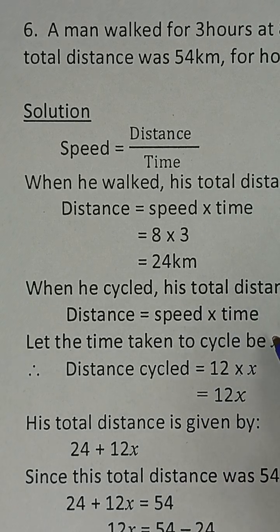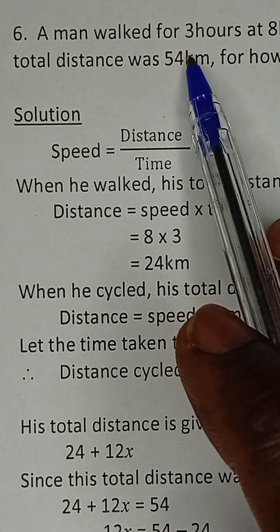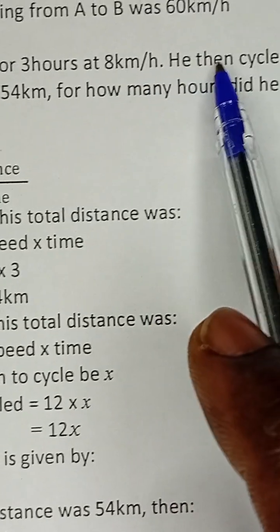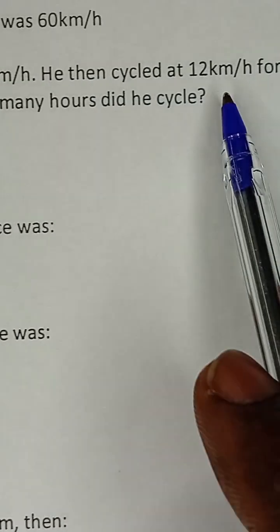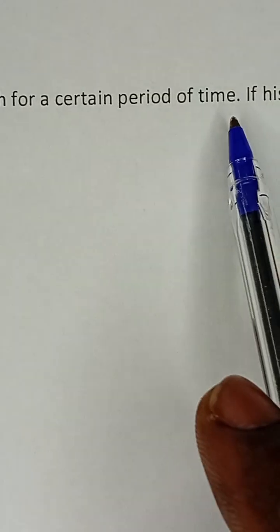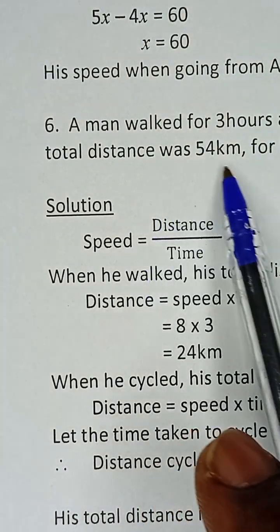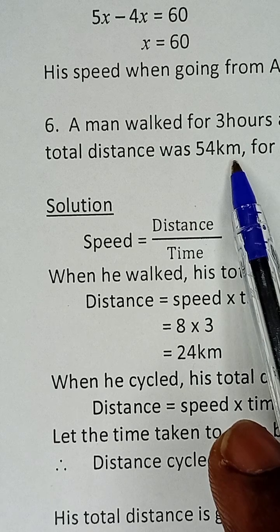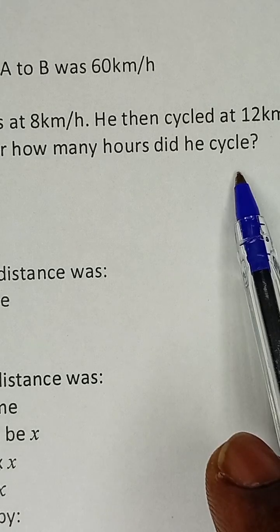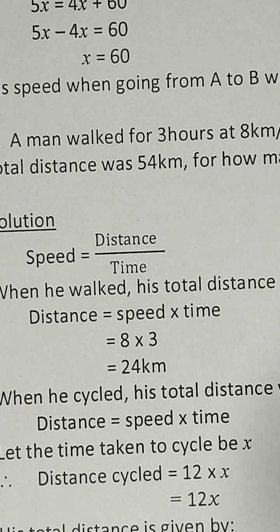The question here says: A man walked for three hours at 8 km/h. He then cycled at 12 km/h for a certain period of time. If his total distance was 54 km, for how many hours did he cycle?